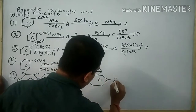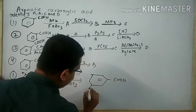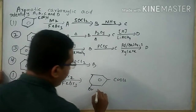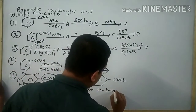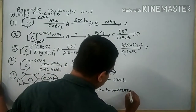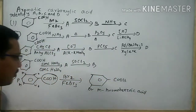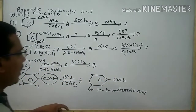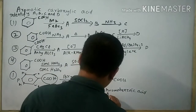And on this product, this is said to be meta-bromo benzoic acid. This is said to be meta-bromo benzoic acid, and it is considered as the product A.